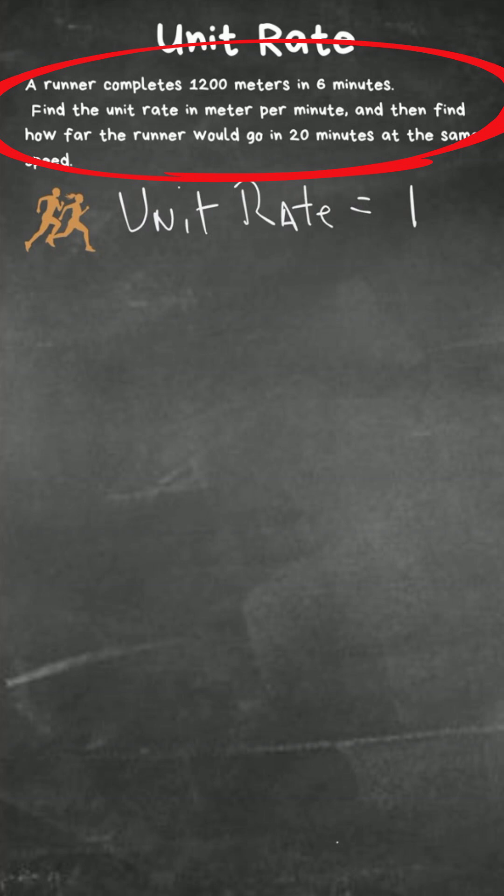in six minutes. Find the unit rate in meters per minute, and then find how far the runner would go in 20 minutes at the same speed. Okay, so first, what we need to do is